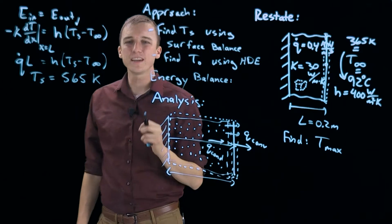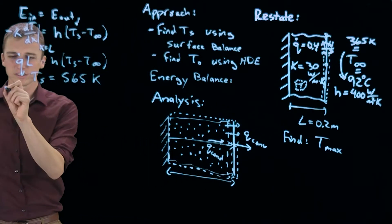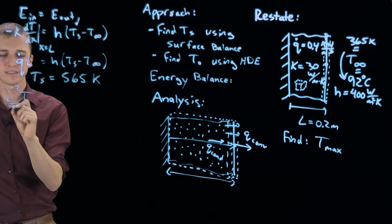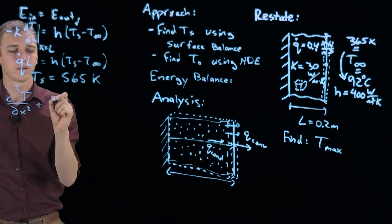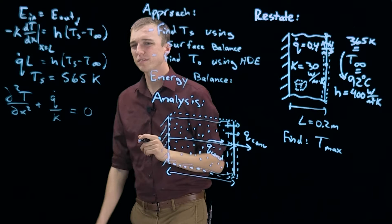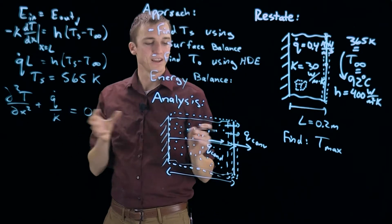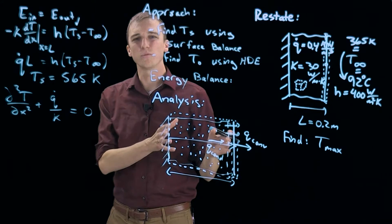Now the reason we even needed this is because we are now going to go to our heat diffusion equation. D squared T dx squared plus q dot over k equals zero. This tells us how the temperature would vary in our 1D wall with heat generation.